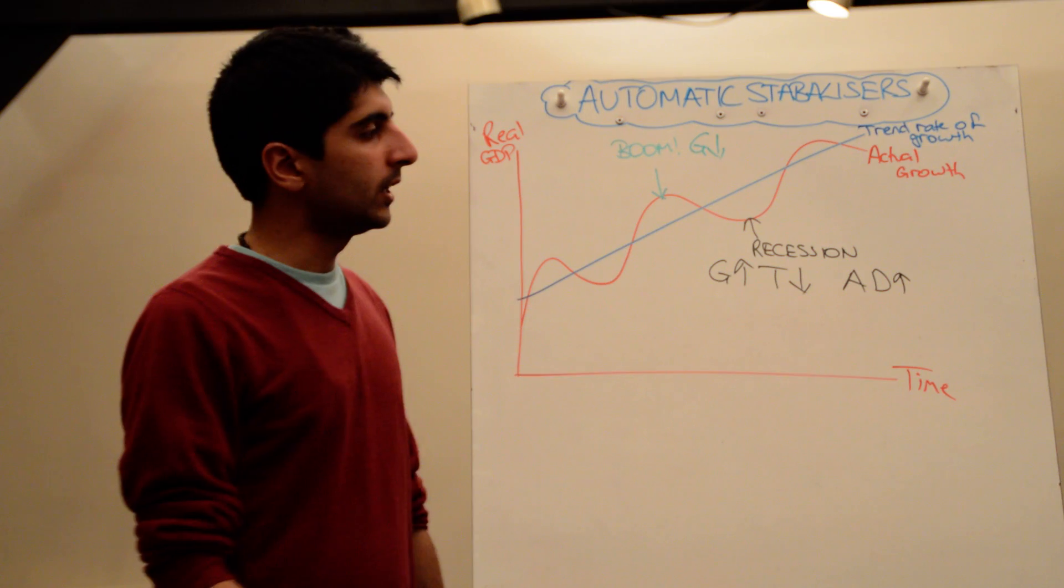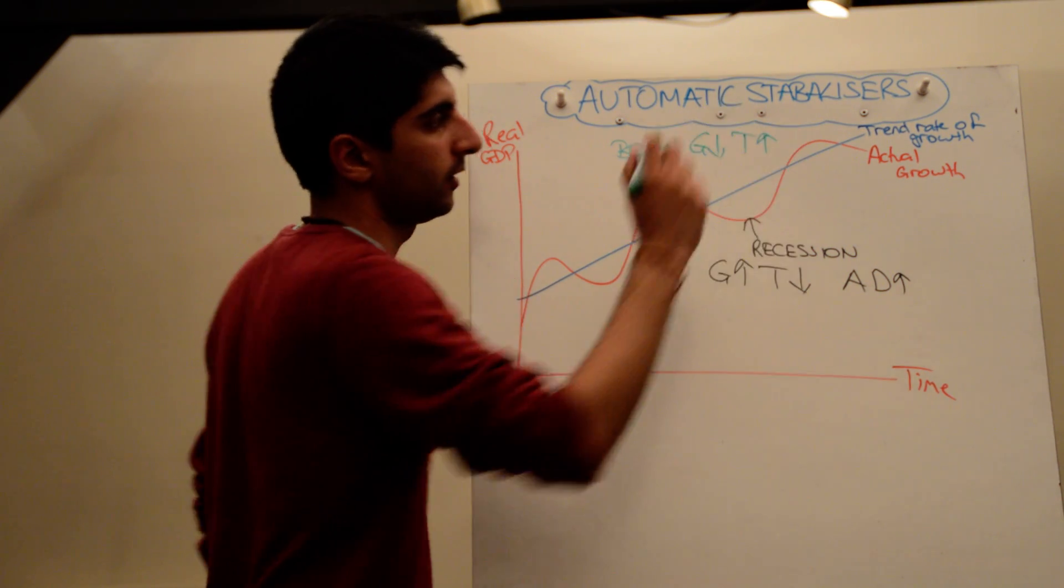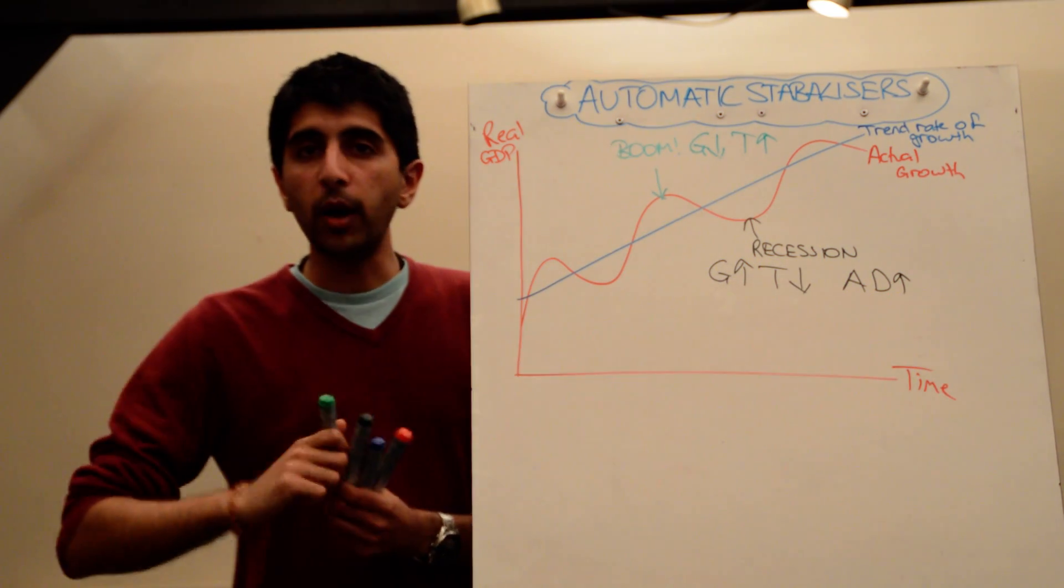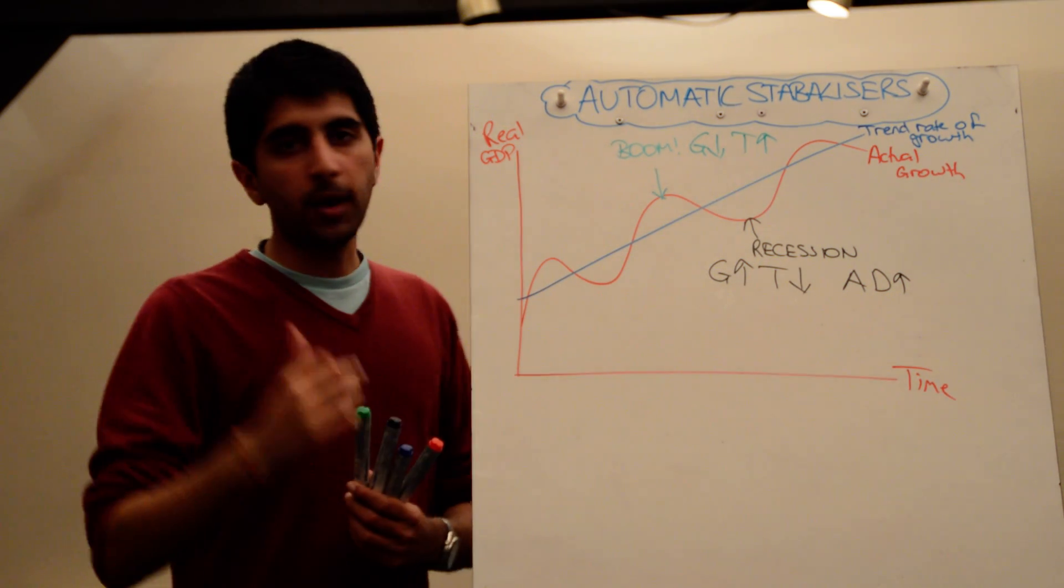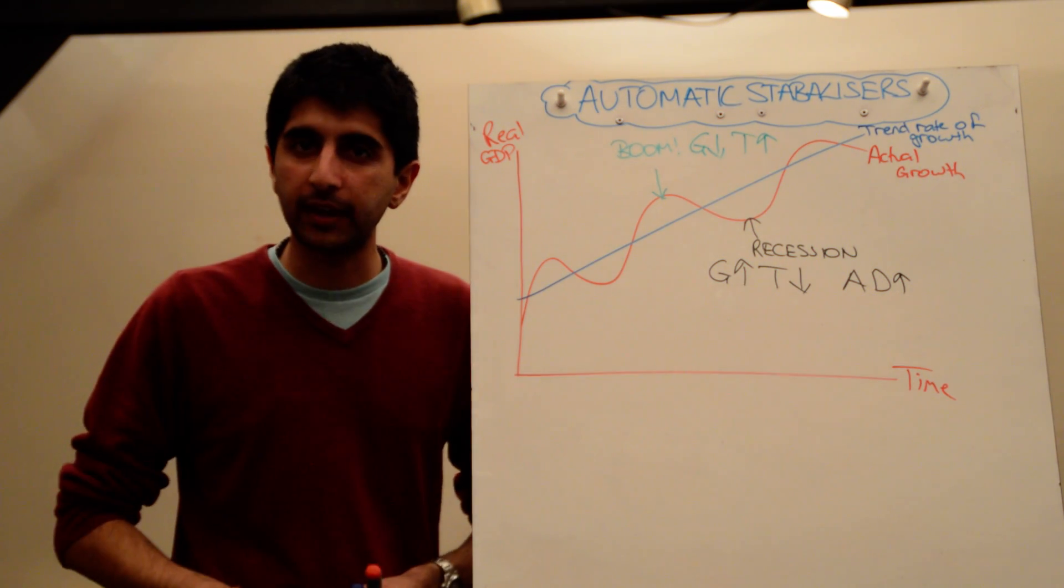In that sense, government spending on benefits actually decreases. They don't need to spend as much on benefits because people have got jobs. At the same time, the tax revenue collected increases because more people are in work and they pay more income tax. Firms achieve high profits, they get higher revenues which means they're going to pay more corporation tax as a result during a boom time.